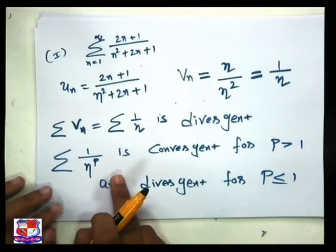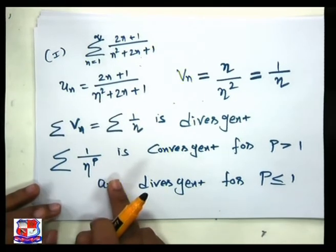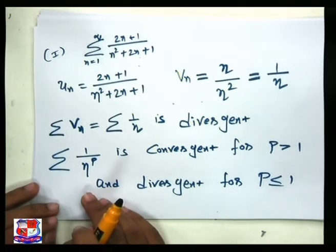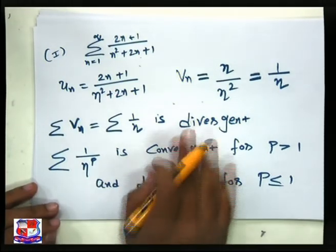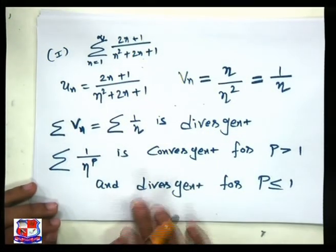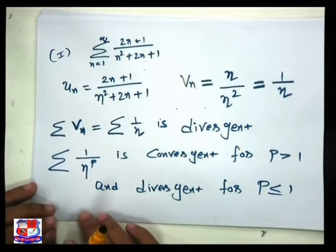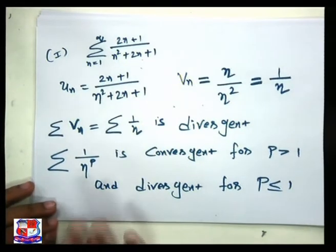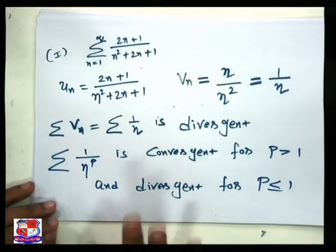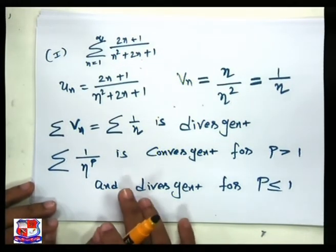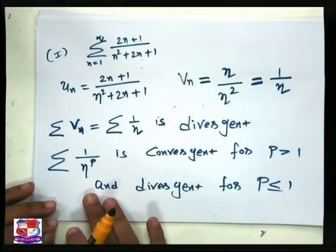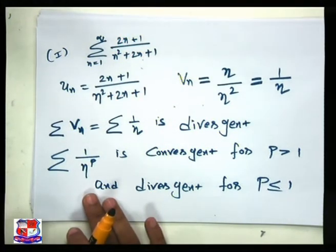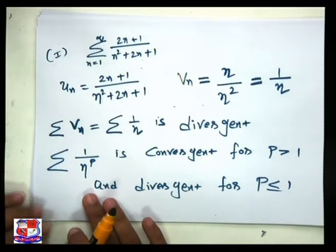The comparison test states: if summation un and summation vn are both positive term series, and the limit of un upon vn as n tends to infinity is finite and nonzero, then both series converge or diverge together. That means if one series is convergent, the other is also convergent; if one is divergent, the other is also divergent. So we want to use that statement.